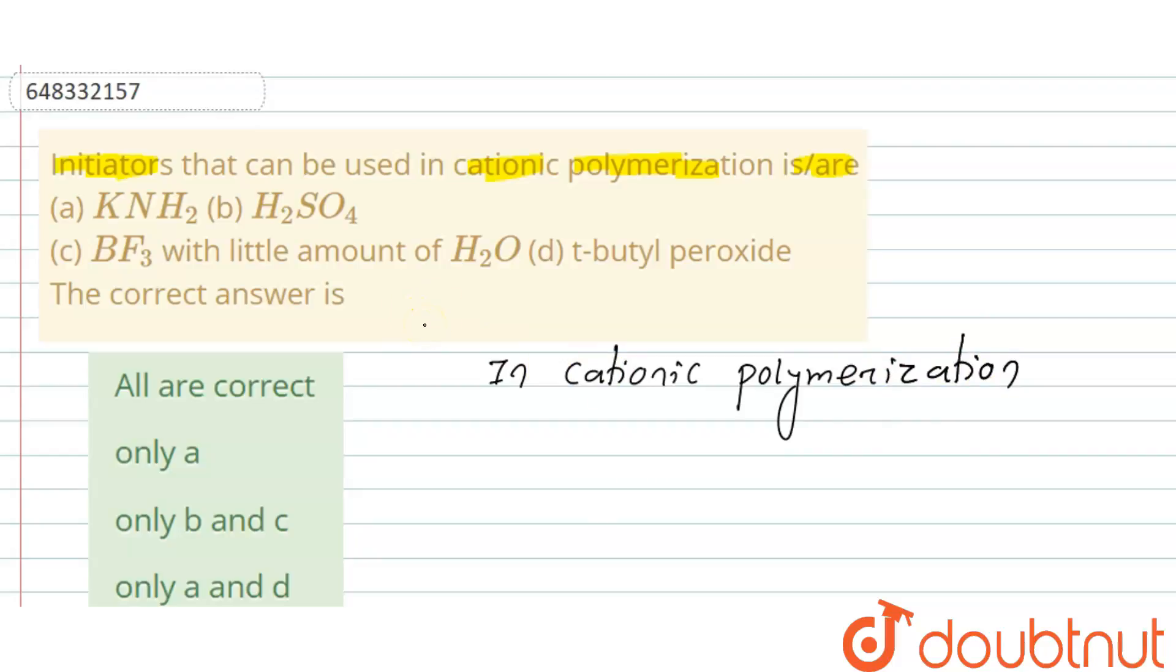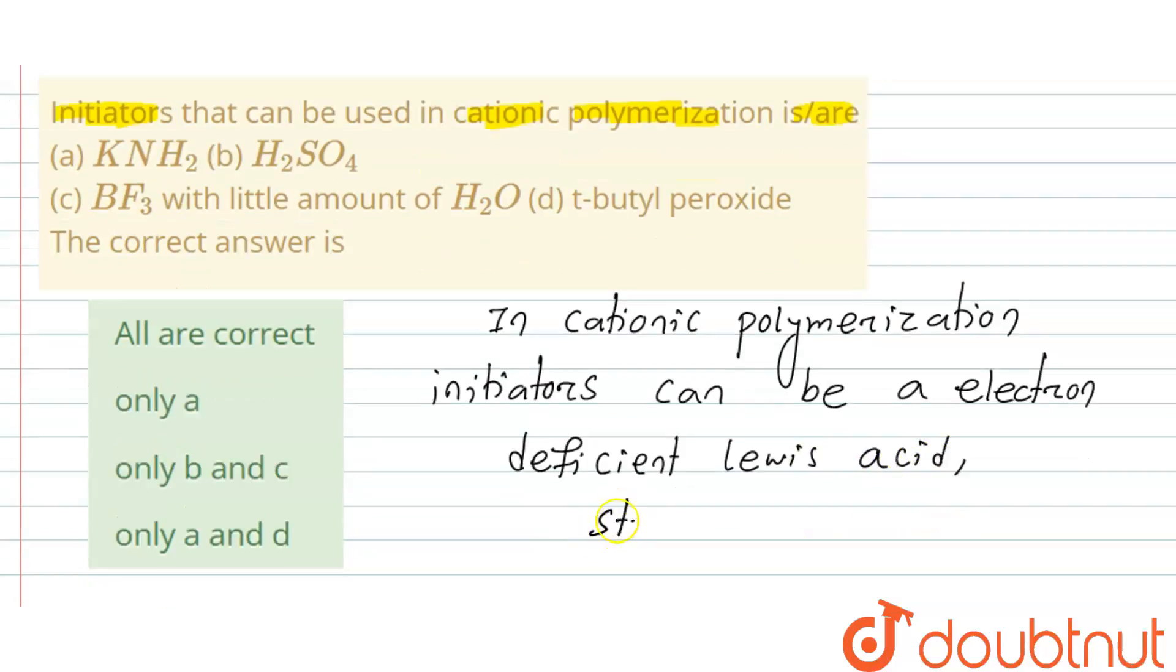In cationic polymerization, initiators can be electron deficient. The initiators can be a Lewis acid, and also strong acid or protic.